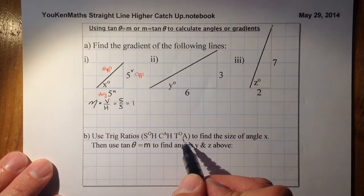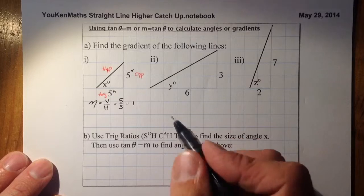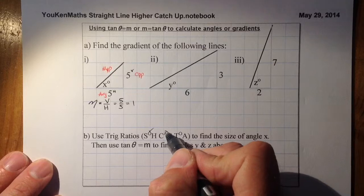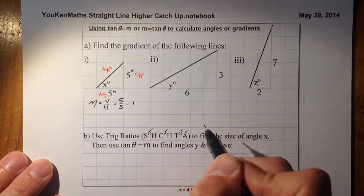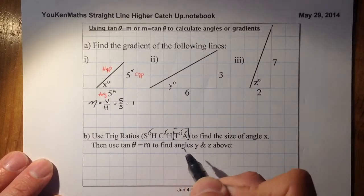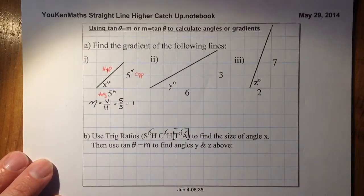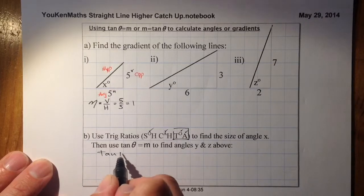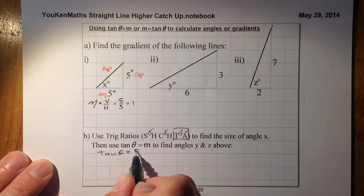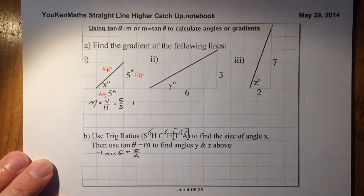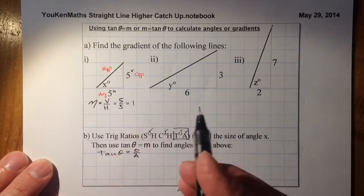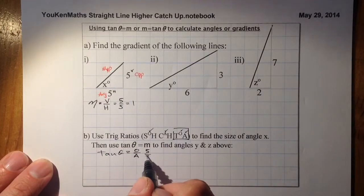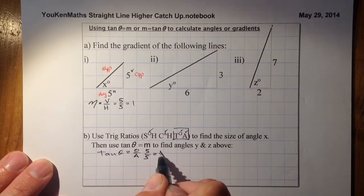I write down SOHCAHTOA to work out which trig ratio to use. I know the opposite and I know the adjacent, so I take opposite and adjacent — the one with the two ticks — and that's going to be the tan ratio. So tan θ equals opposite over adjacent. Putting in my values, the opposite is 5 and the adjacent is 5, so that's equal to 1.